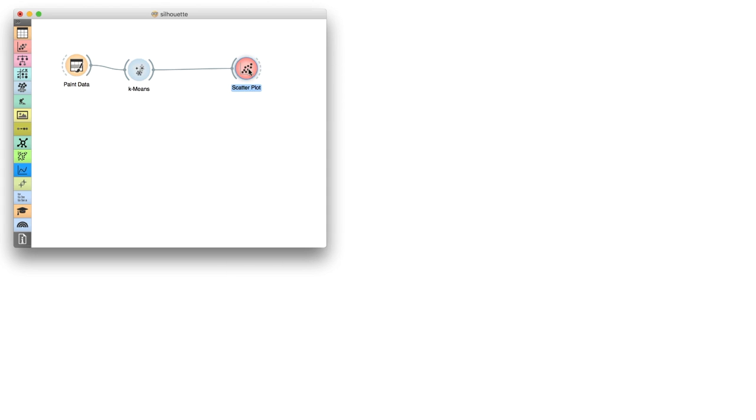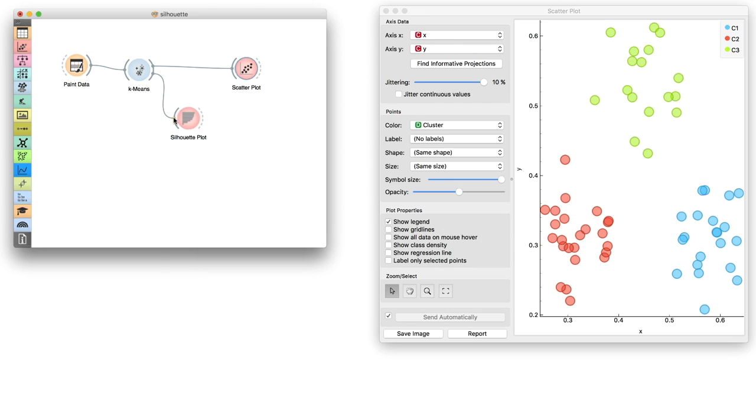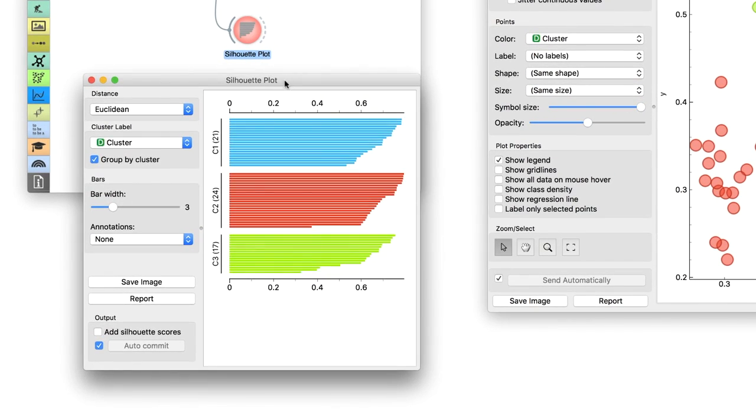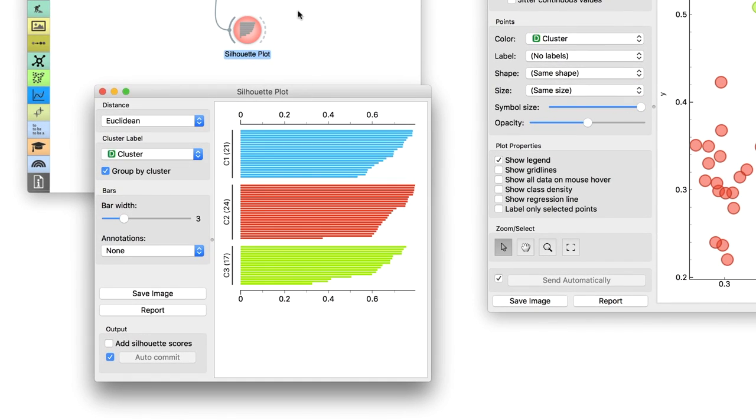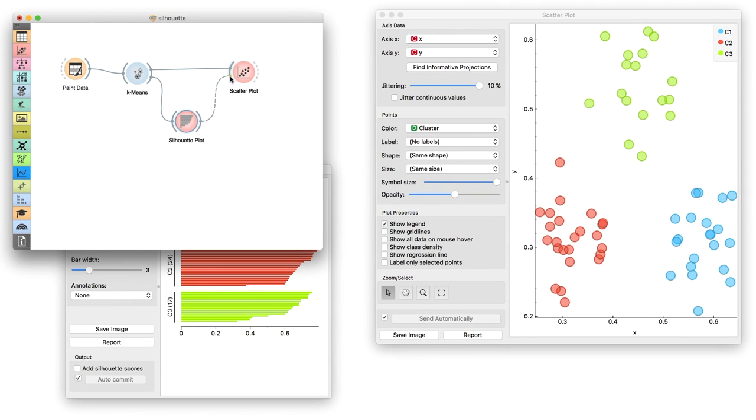I will use Silhouette widget to find points that are close to the center of the red cluster. To observe where the selected data instances lie, I will connect Silhouette to the scatter plot.